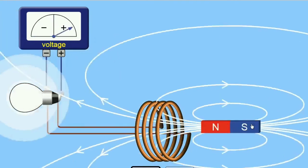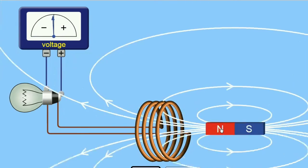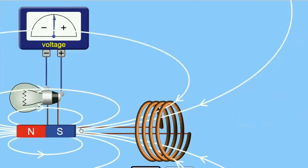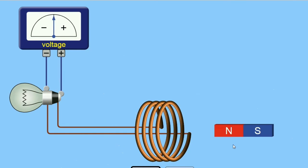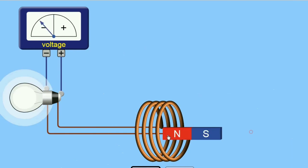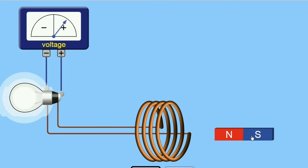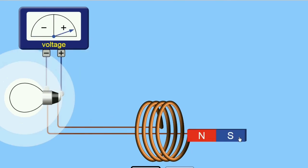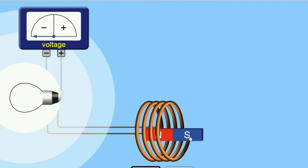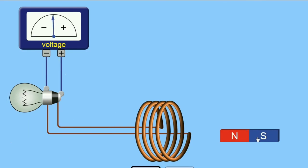We can generate a voltage and current by pushing a magnet into a coil. The size of the induced voltage can be increased by moving the magnet more quickly, using a stronger magnet, and using a coil with a larger cross-sectional area.